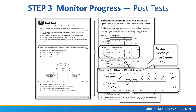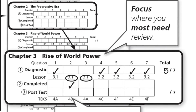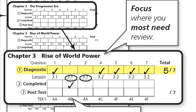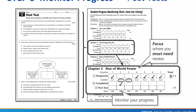Students can use the progress monitoring chart to record individualized learning plans. When preparation time is limited, such as for retests, this three-step approach is an effective way to prioritize and individualize remediation.